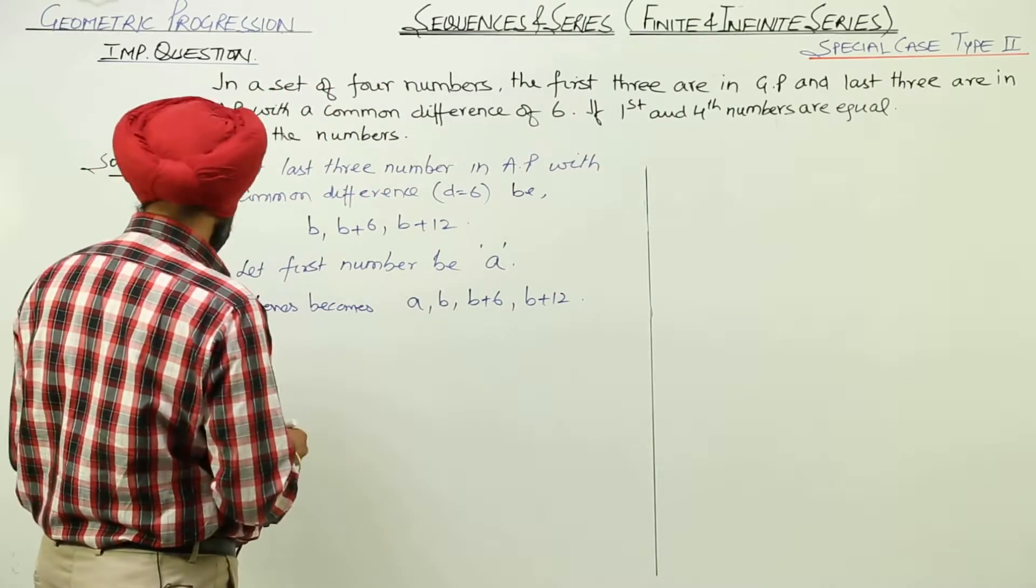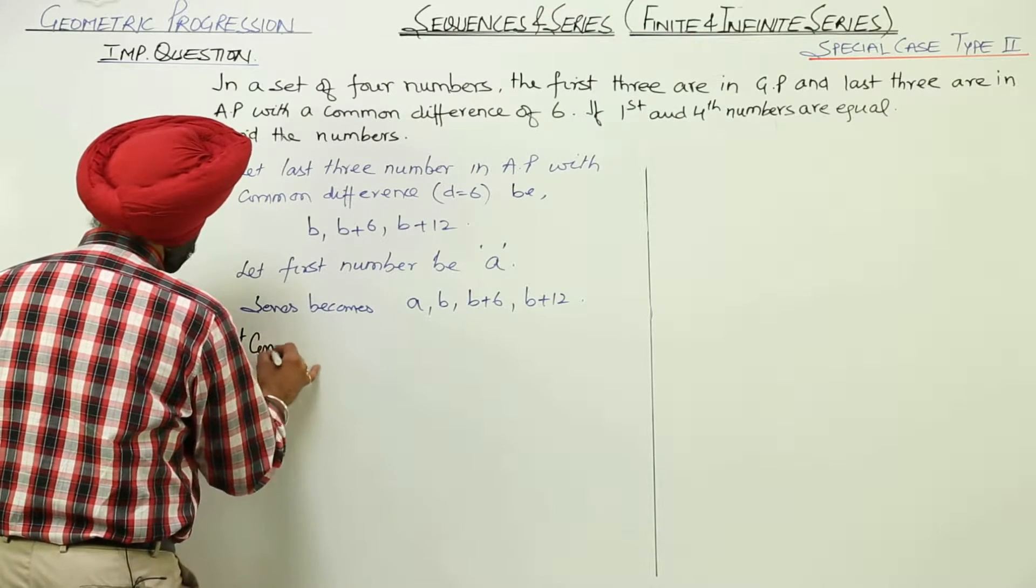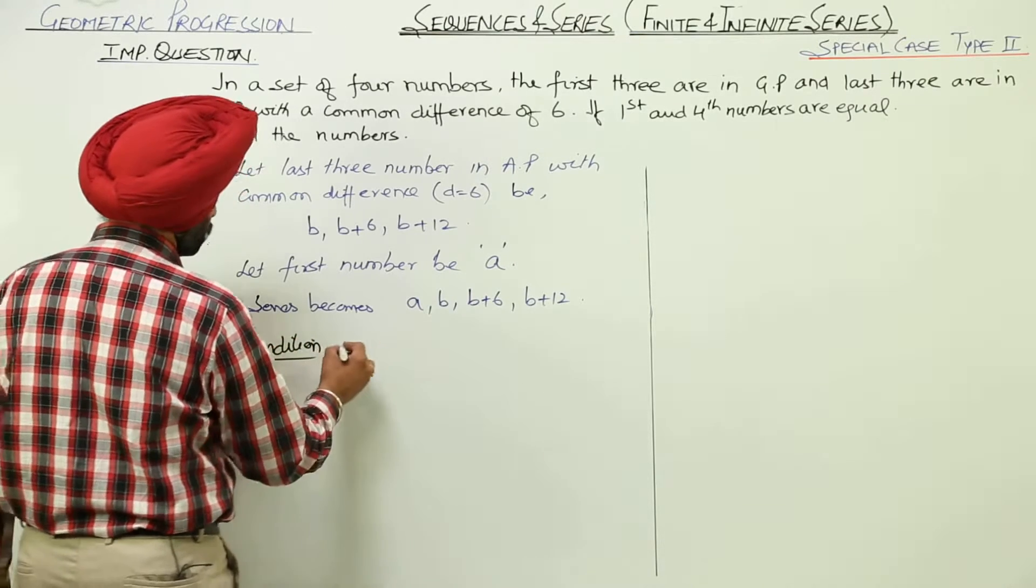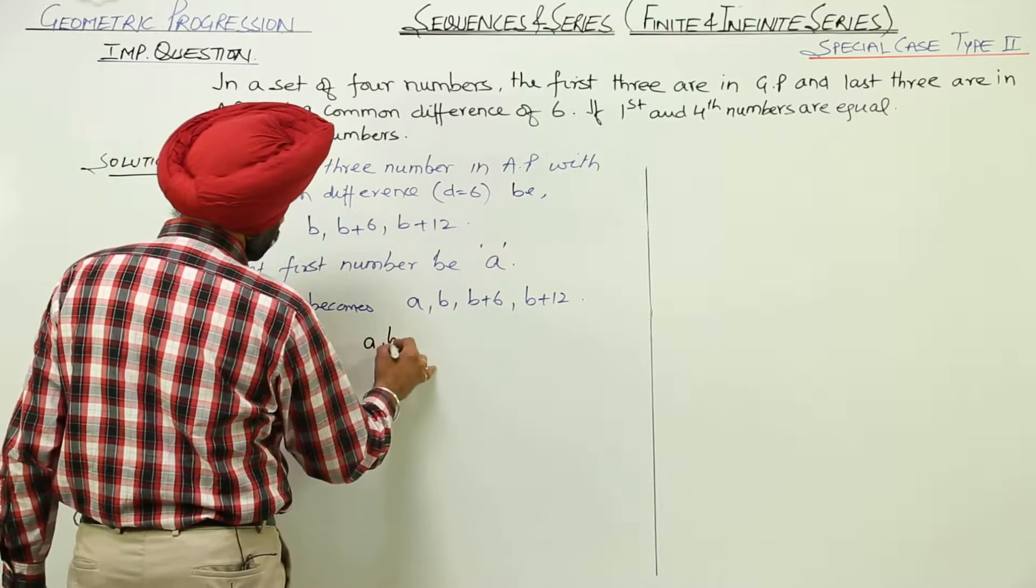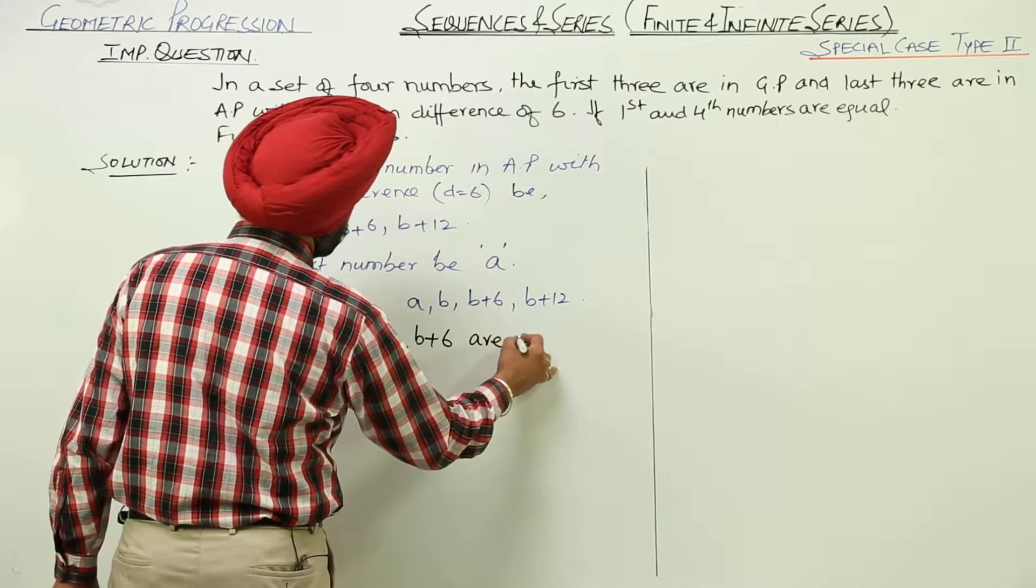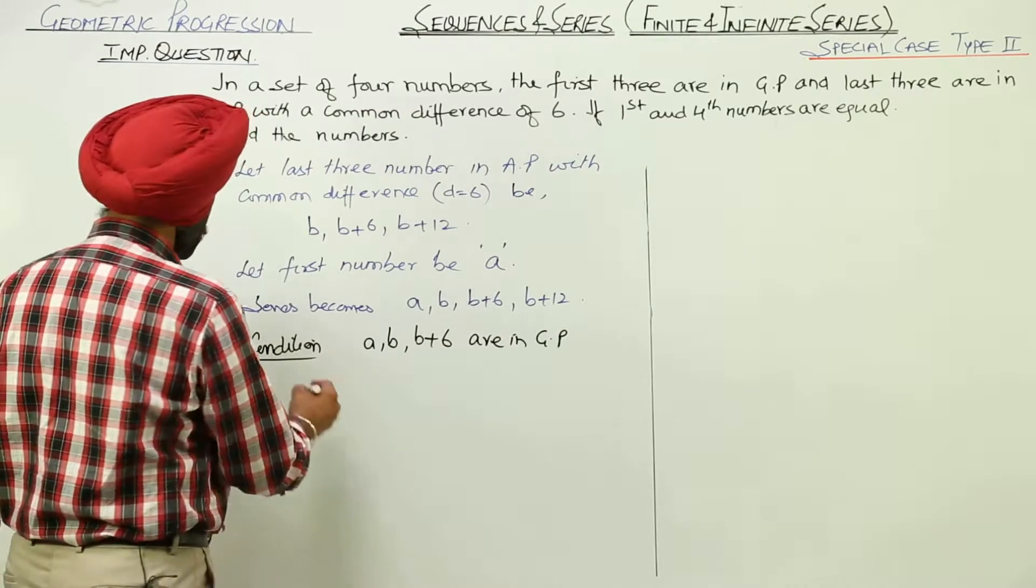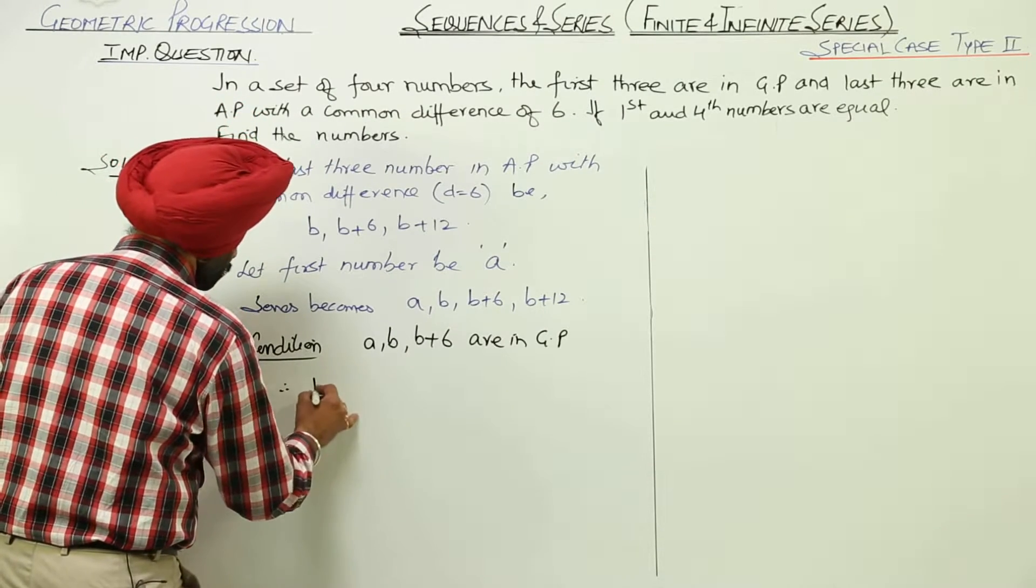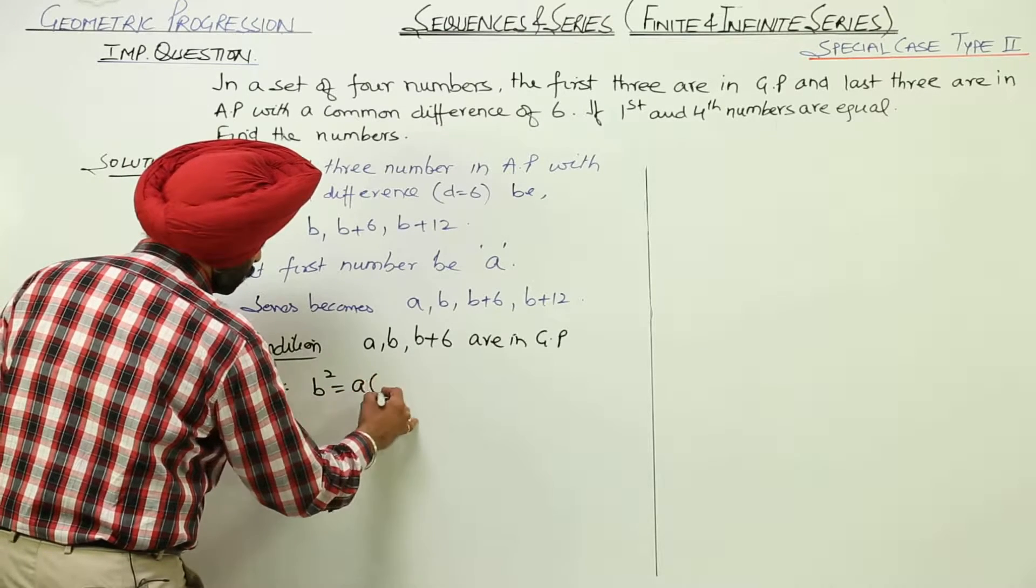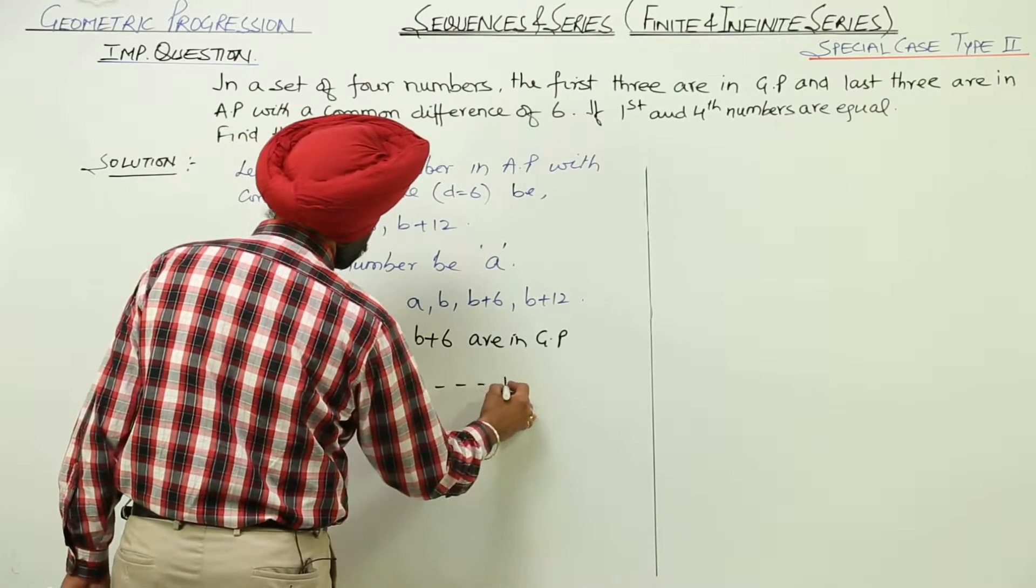What is the first condition? First condition A, B and B plus 6 are in GP. This is the first condition. Therefore, when it is in GP, we can write it B square is equal to A with B plus 6. Number 1.